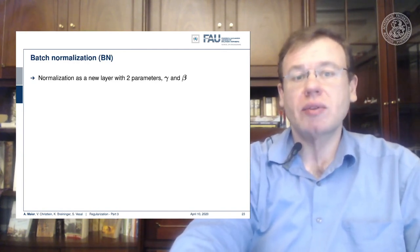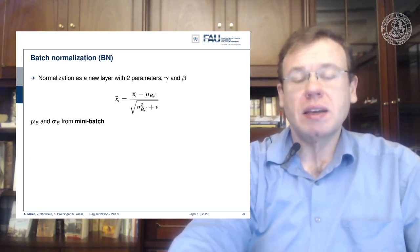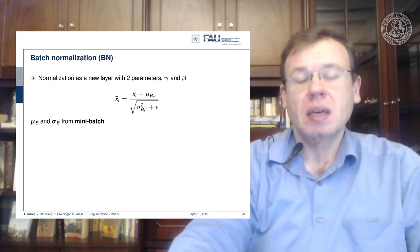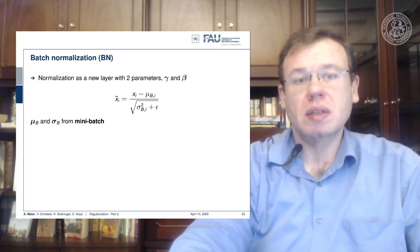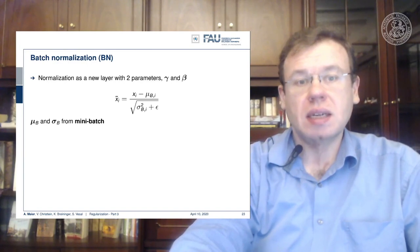The idea in batch normalization is that you add a new layer with two new parameters, gamma and beta. And at the input of the layer you start measuring the mean and the standard deviation of the batch. So what you do is you compute over the mini-batch the current mean and standard deviation.